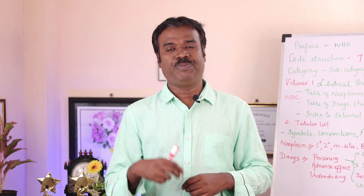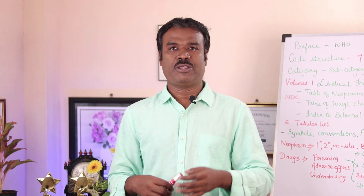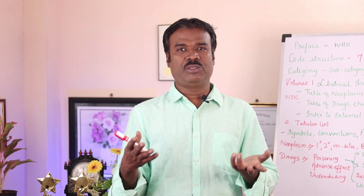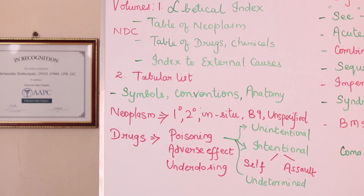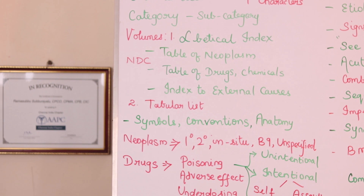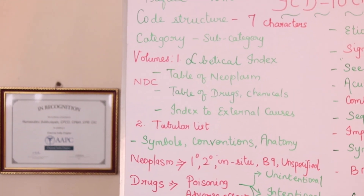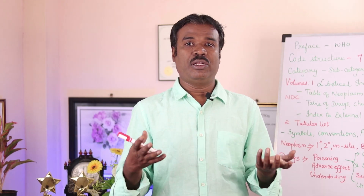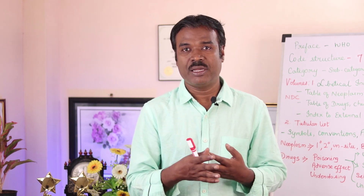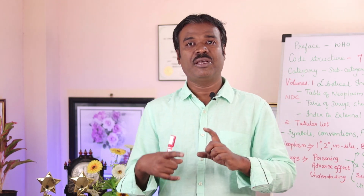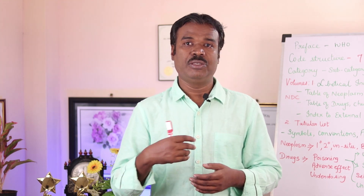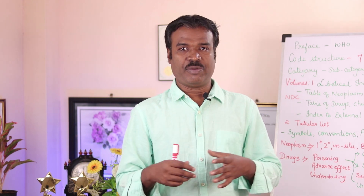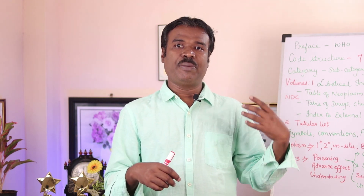Next comes the table of neoplasms. A neoplasm is a tumor — tumor not specified. Here you should understand the types of neoplasm: whether the tumor or mass is a benign one or a malignant one. Sometimes the document does not say whether it is benign or malignant, in which case you should report it as an unspecified neoplasm or unspecified tumor.